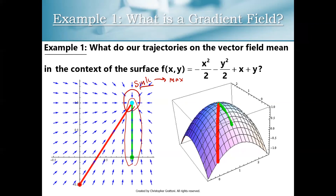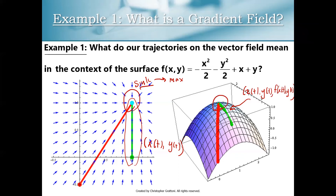These trajectories are ordered pairs x of t comma y of t. If you map that trajectory onto the surface, that's x of t comma y of t plotted on the surface. If we map our trajectory onto the surface, that's basically a hiking trail that goes in the direction of greatest initial increase on the surface until we start to approach a local maximum, a global maximum, sometimes a saddle point, or sometimes a surface where you go uphill forever.